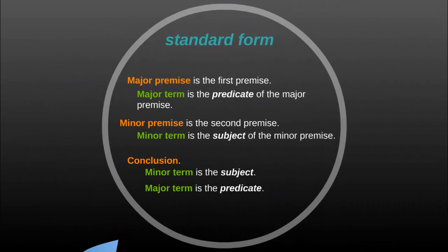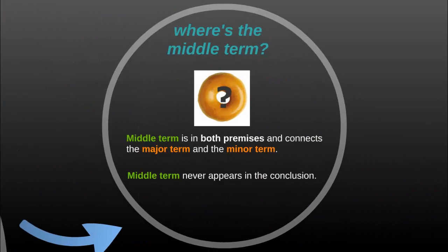Categorical syllogisms often appear in what is called standard form. In standard form, the major premise is listed first, followed by the minor premise, followed by the conclusion. Please note, syllogisms are not required to be in this form, so you may find that the major premise and the minor premise are in a different order. But the conclusion will always be last.